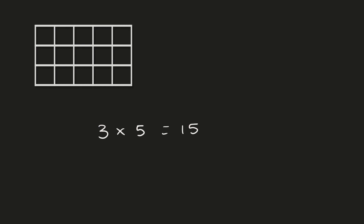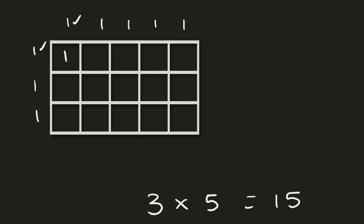Three times five is 15, but I can visualize that as this area model. It's a very specific area model. You can see I have one, two, three things along this side, and one, two, three, four, five things along this side. The area of each one of those squares is the product of the value above it and off to the left of it — the product of its dimensions. When I multiply one times one, I get an area of one. It turns out all of these are one. So the area of three times five is 15 square units — three units times five units is 15 units squared.